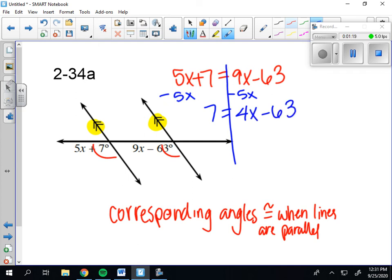And then I want to move the 63 away, so I'm gonna add it to cancel it out because negative and positive cancel, and then I have 70 equals 4x.